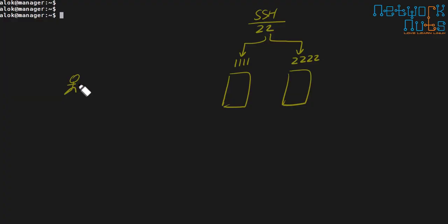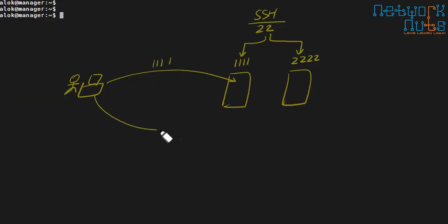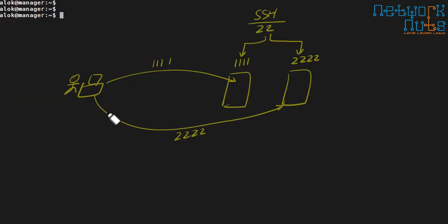How will you access these machines and how will you remember the ports? You are working from a different machine, so you have to remember that whenever you SSH to one machine you use port 1111 and for the other you use 2222. This can be very tedious and time consuming, especially if you are also using multiple SSH keys for passwordless authentication.